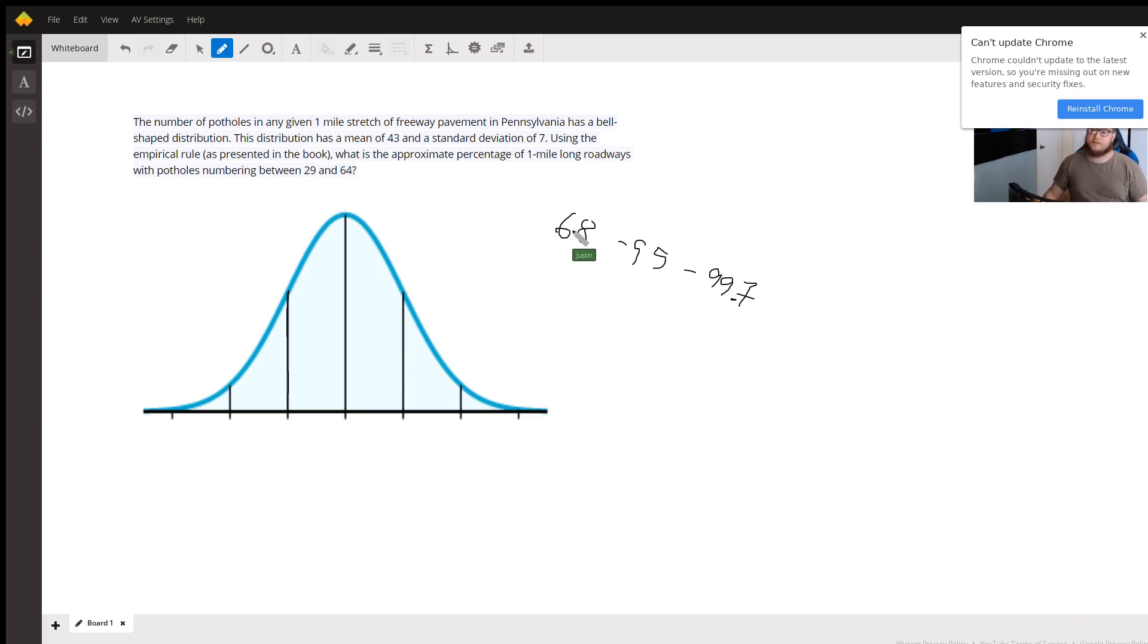If we go one standard deviation above or below the mean, we will contain 68% of the entire population of one mile stretches of roads. If we go two standard deviations above and below the mean, we will contain 95% of the population of roads.